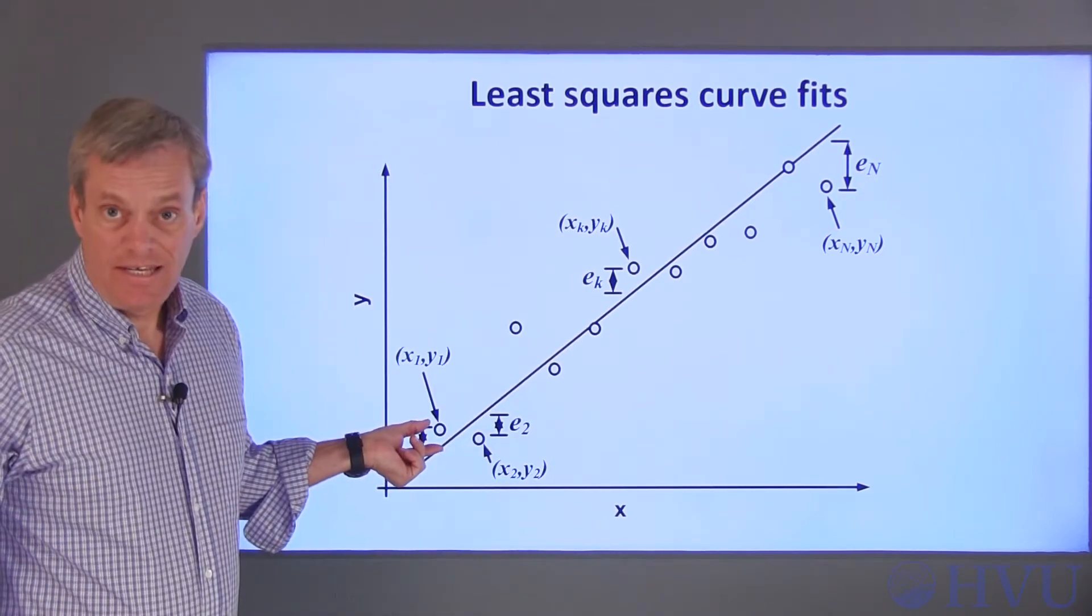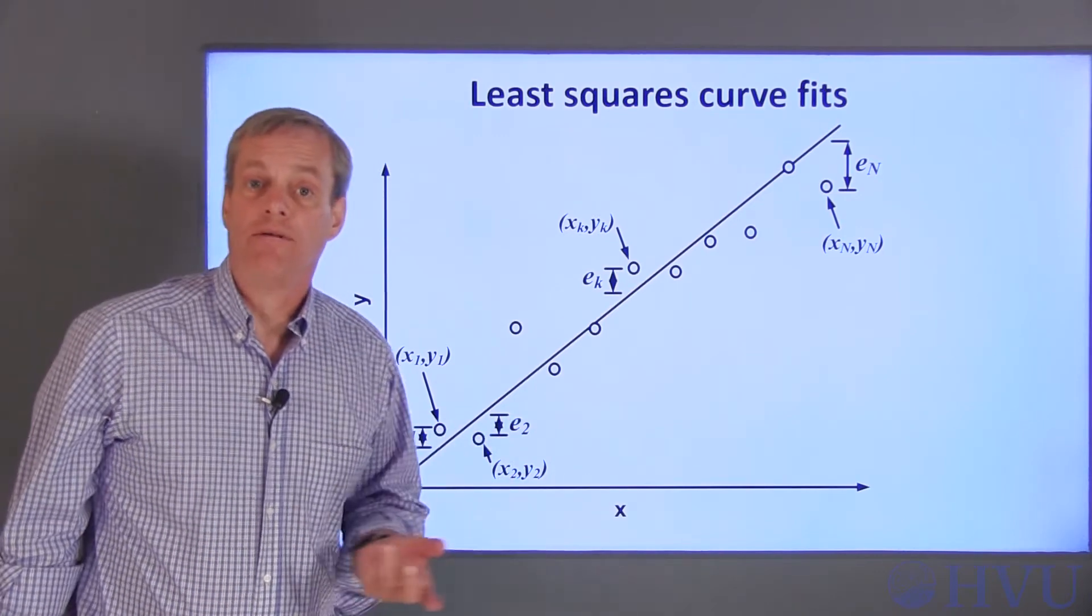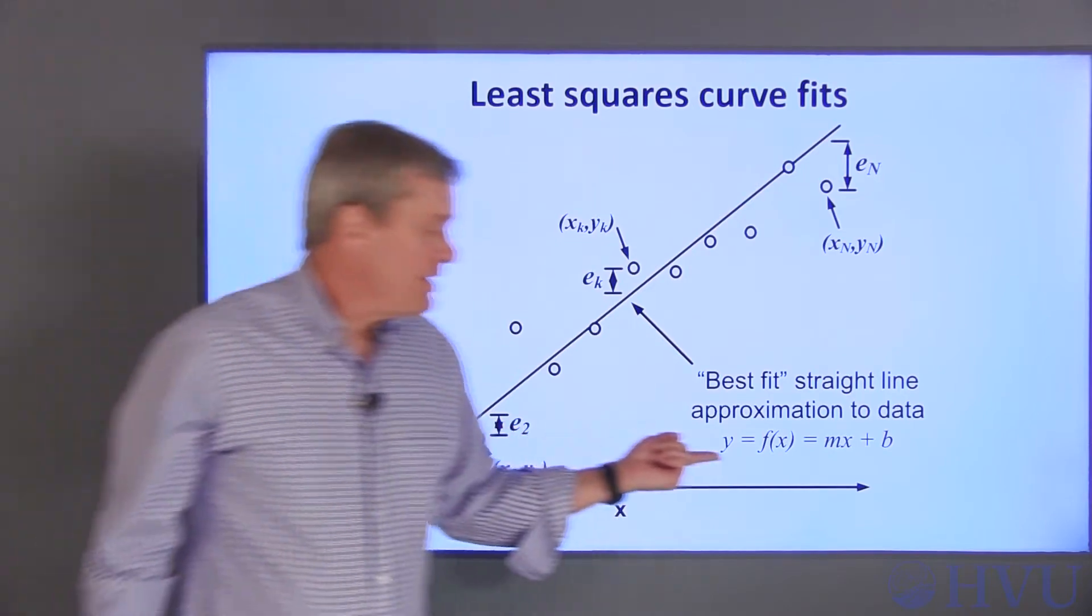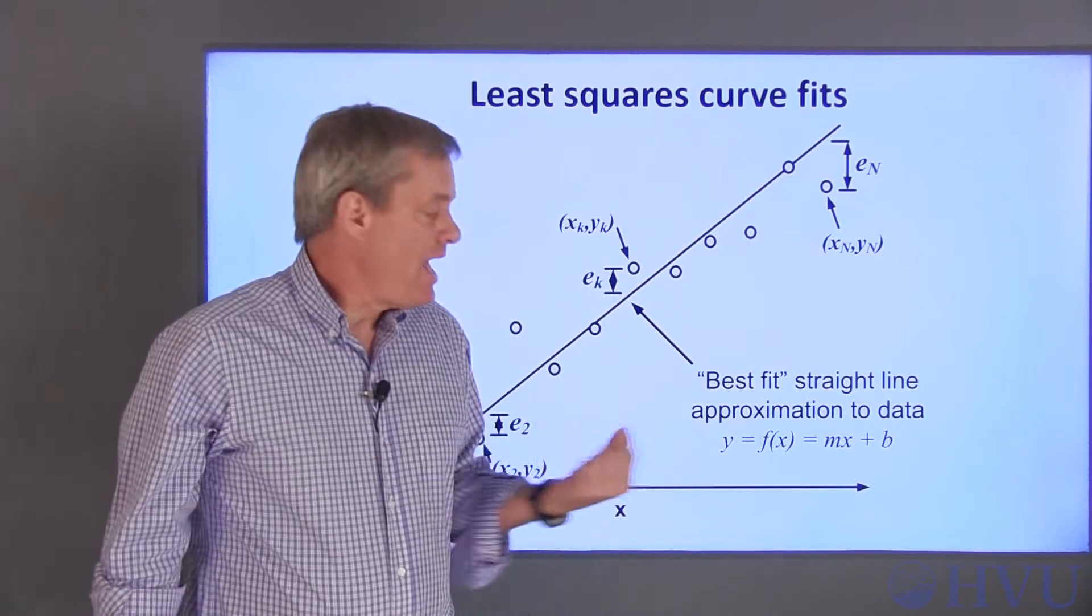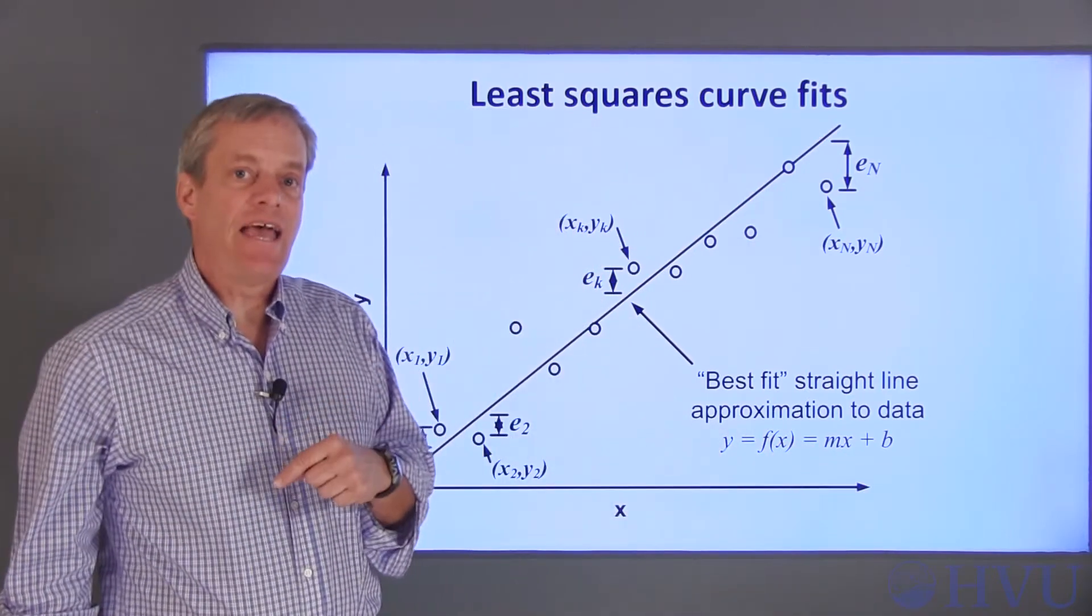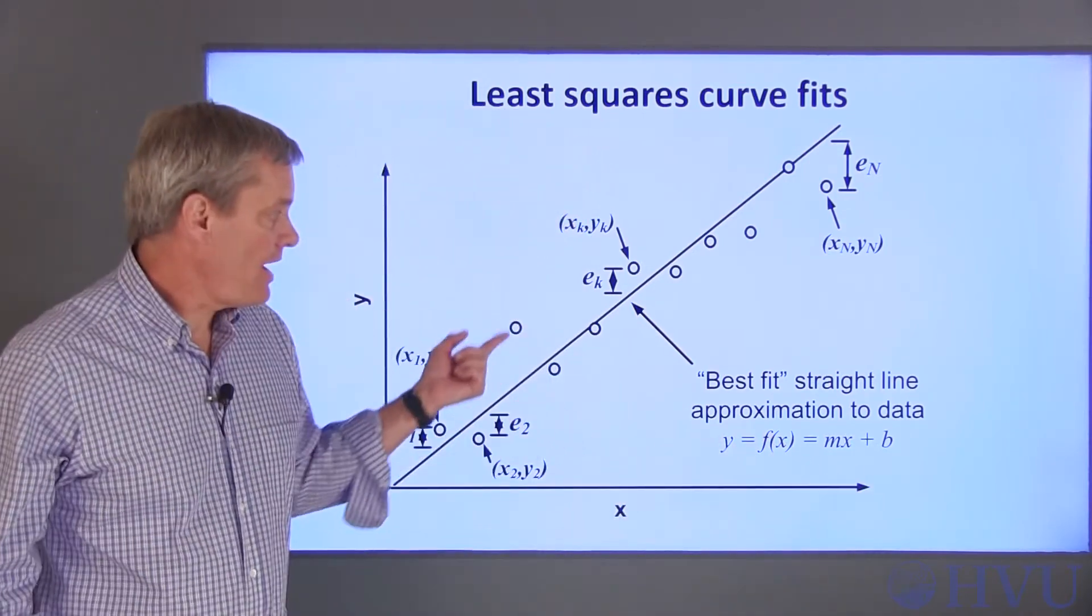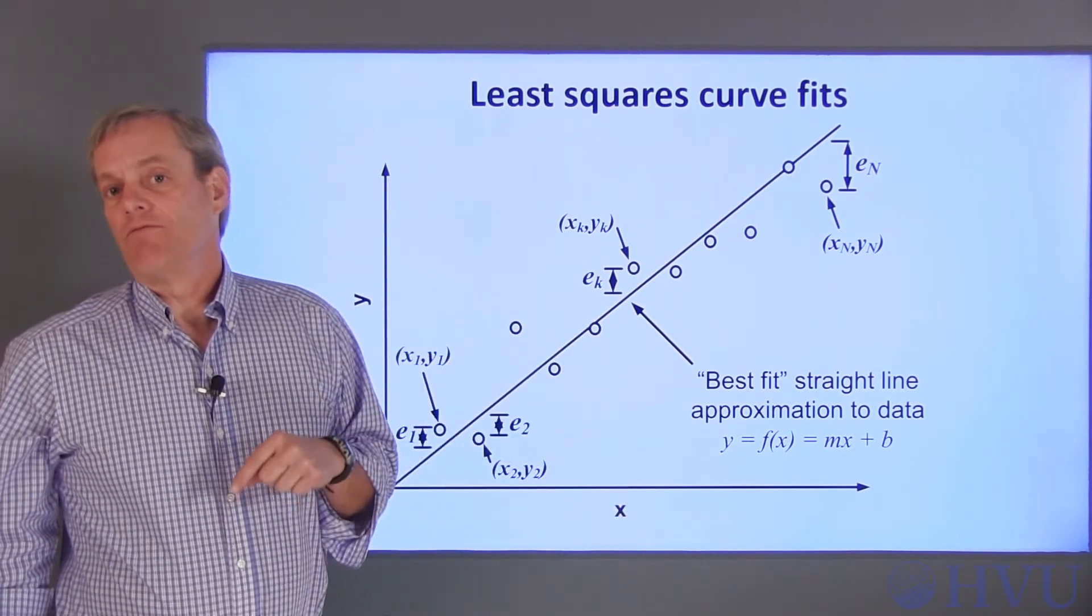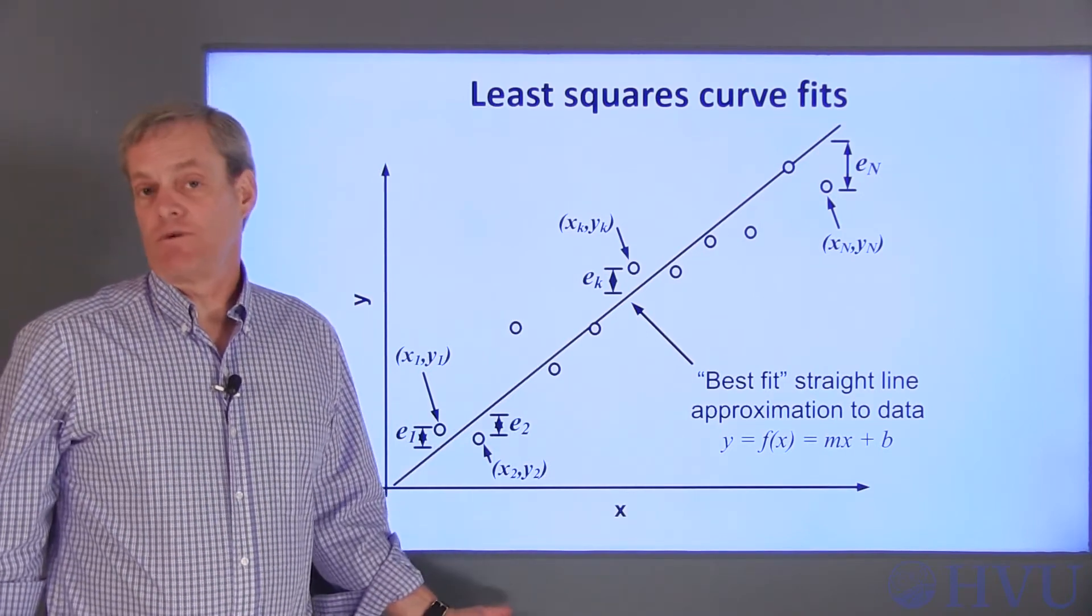So the error at X1 is E1, the error at X2 is E2, and so on. Since we've chosen to represent the data by a straight line, its equation is Y equals Mx plus B, where M is the slope of the line and B is the Y-intercept. We want to find M and B such that the sum of the squares of all of these errors are as small as possible. It's the line that gives us the least value of the square of the errors, hence the term least squares curve fit.